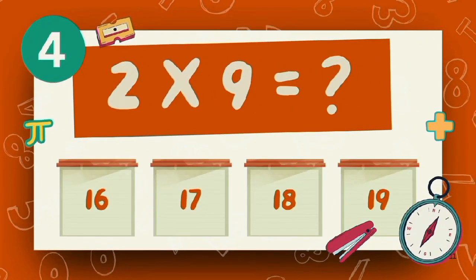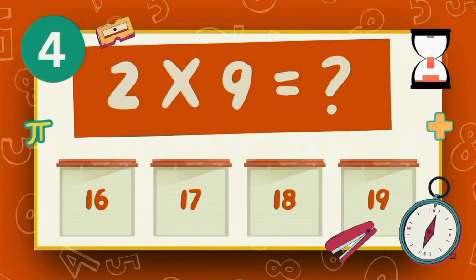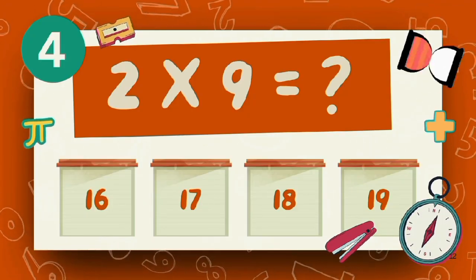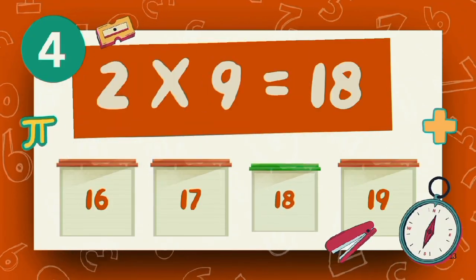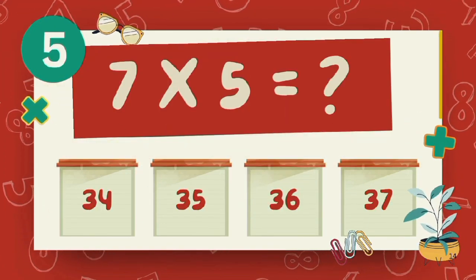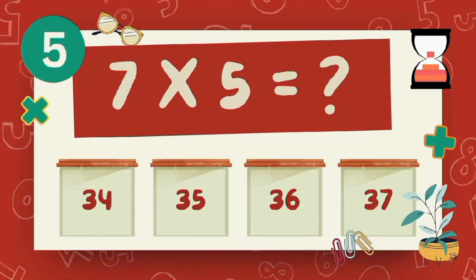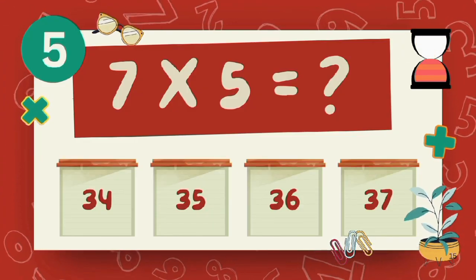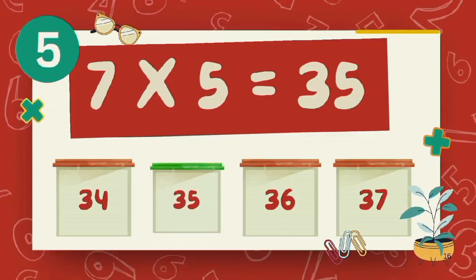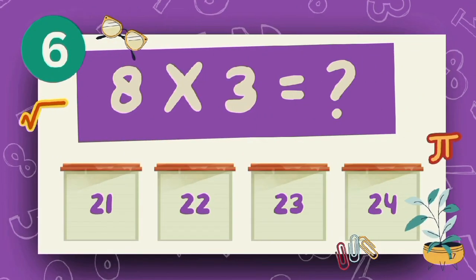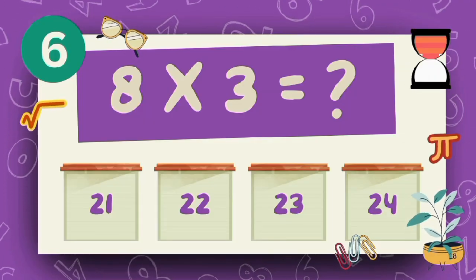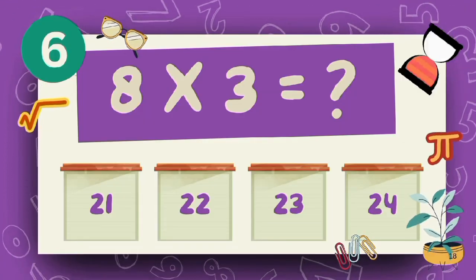What is 2 multiply 9? The answer is 18. What is 7 multiply 5? The answer is 35. What is 8 multiply 3? The answer is 24.